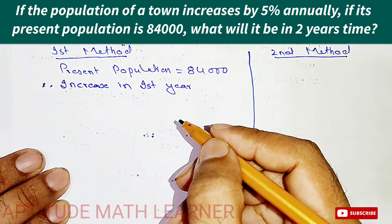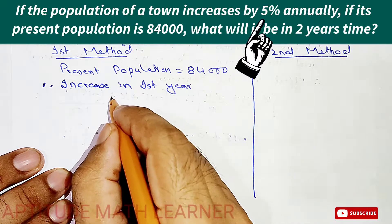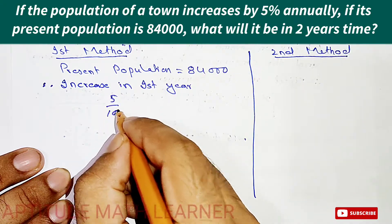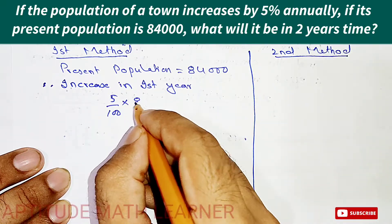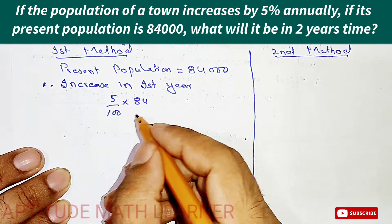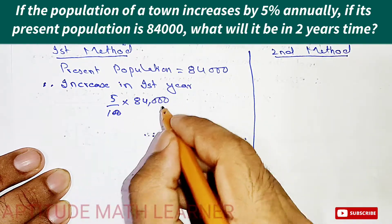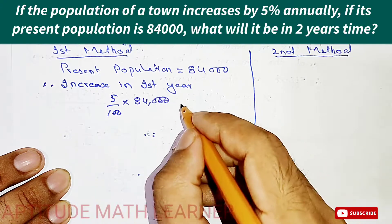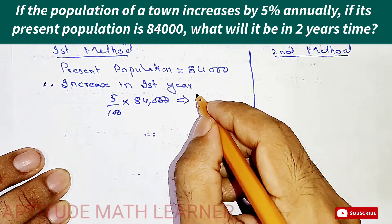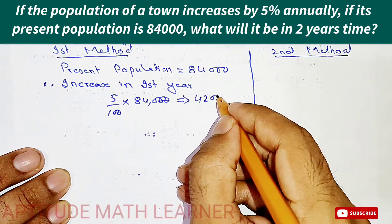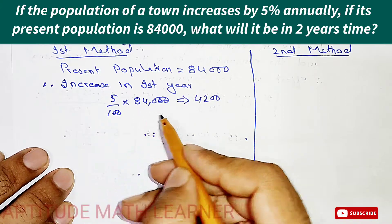After one year, the population increases by five percent. So we take five percent of the present population. Cancelling zeros, five multiplied by 840 gives us four thousand two hundred.